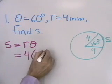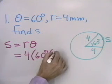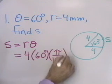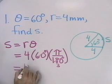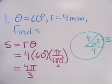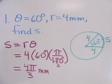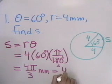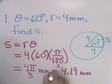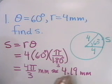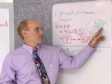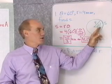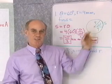θ is 60 degrees, and I'll convert 60 degrees into radians by multiplying by π over 180 degrees. Dividing 60 into 180 goes 3 times, giving 4π over 3, and the units will be millimeters. Converting to a decimal using a calculator gives approximately 4.19 mm. So the arc length s is 4π/3 mm, or approximately 4.19 mm — that's the length of the arc cut off by a central angle of 60 degrees in a circle with radius 4.